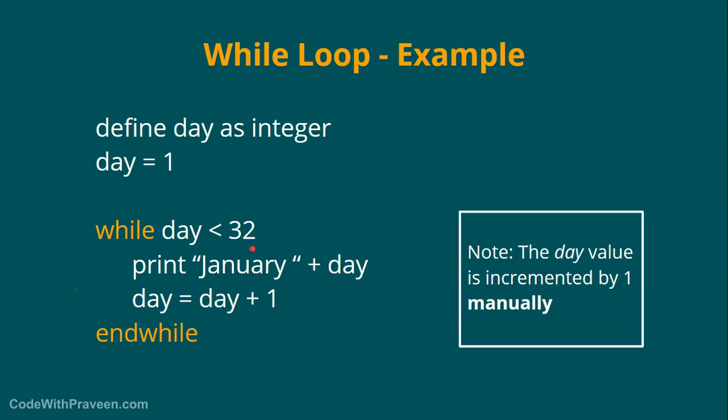Now it's 2. 2 is less than 32, yes. So again prints January 2. Then again you increment. So this cycle keeps repeating until the day variable value exceeds this condition. So in our case if it becomes 32, then 32 is less than 32? No. Then it exits out of this while loop. Then any statement below this while loop continues after this.